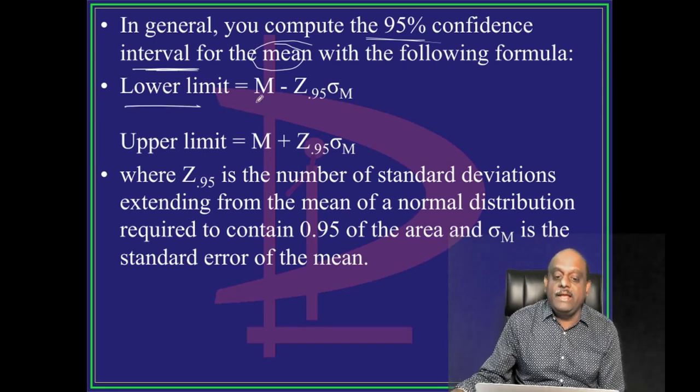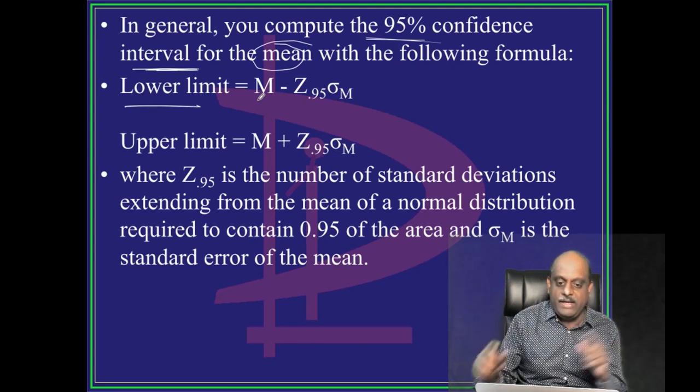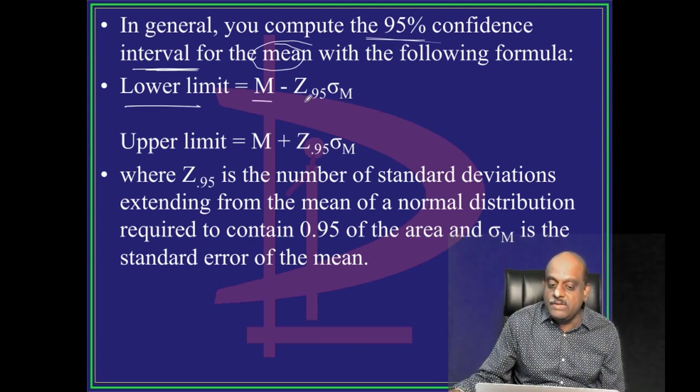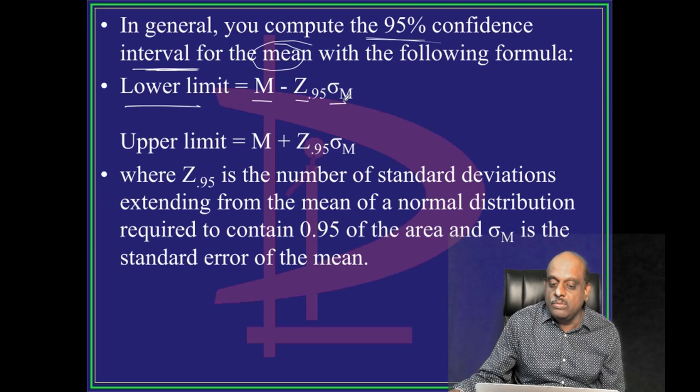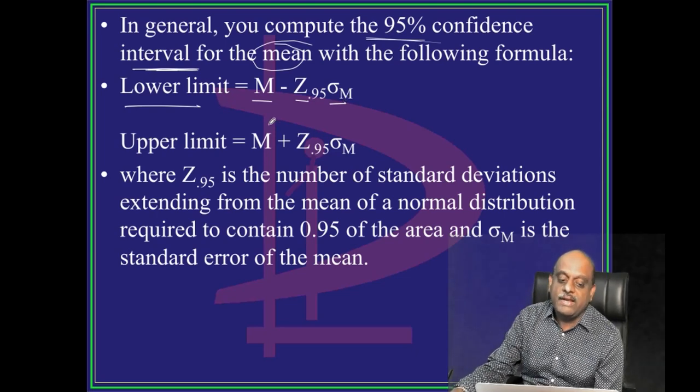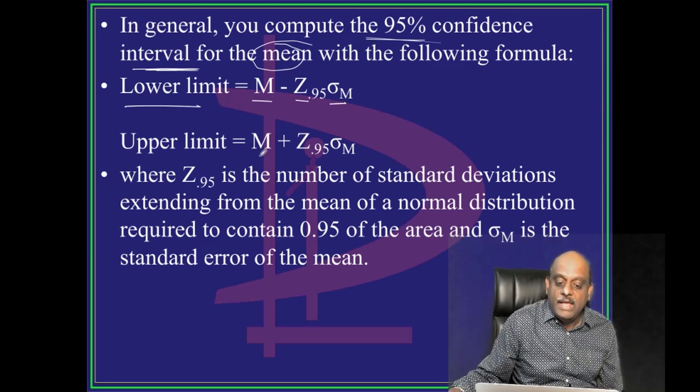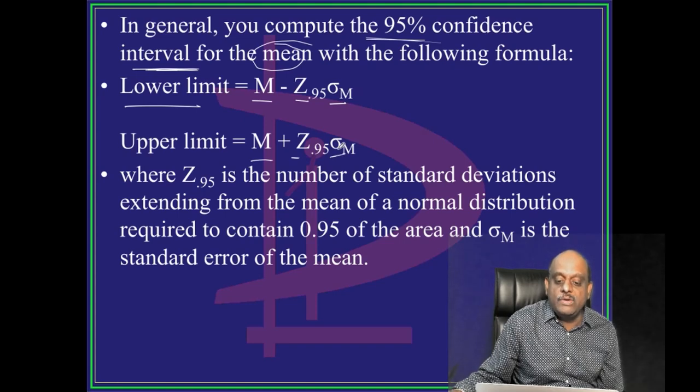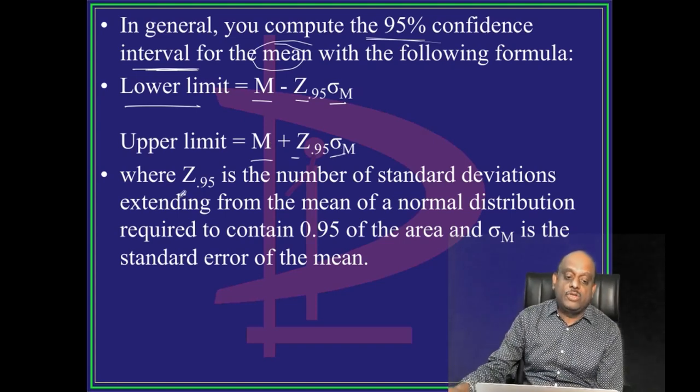Lower limit is M minus Z into standard deviation. Upper limit is M plus Z into standard deviation. So what is meant by Z?